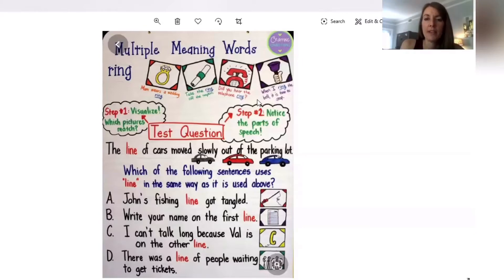And then the fourth one is when I ring the bell it is time to stop. So I'm visualizing someone just like that picture, holding on to something and moving their hand to get that bell to work. So that is a verb. That person is doing an action, they're ringing the bell.